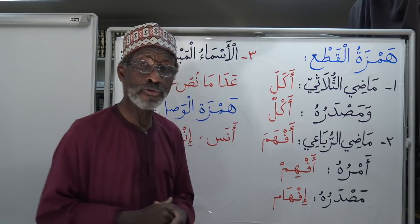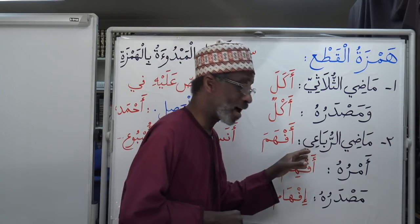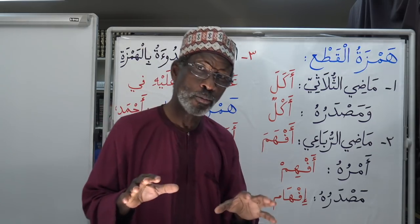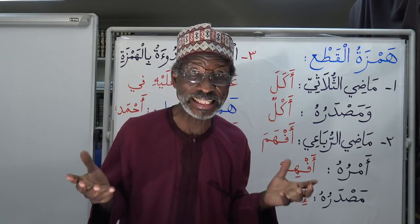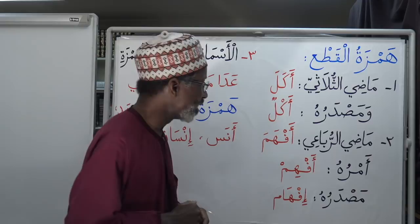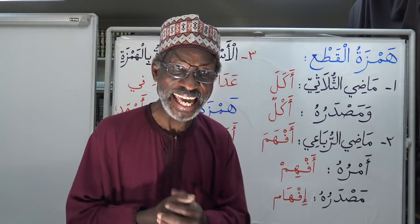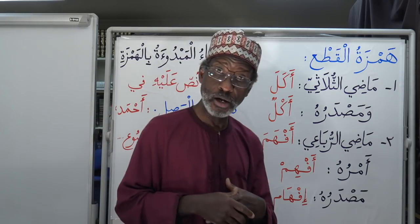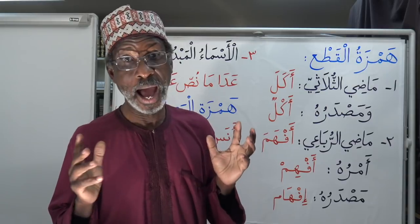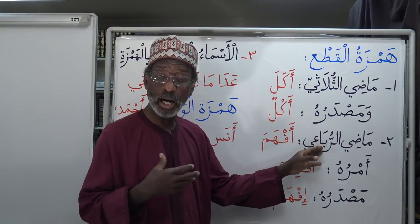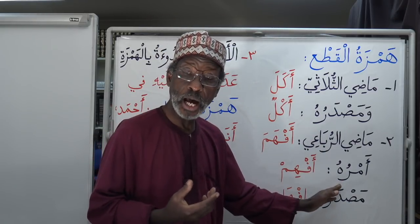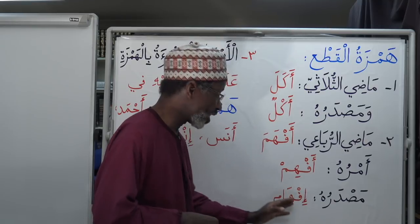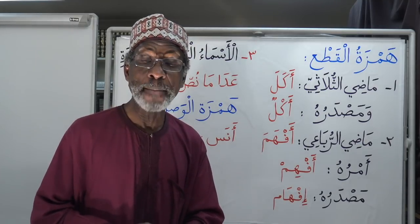The second place where you find Hamzatul Qat' is in the rubai — the four-letter verb, which in English is form four — af'ala. All those form four verbs: whether it's the past tense, the imperative, or the verbal noun masdar — for example, af'ama, af-him, if-ham — the rubai always carries Hamzatul Qat'.